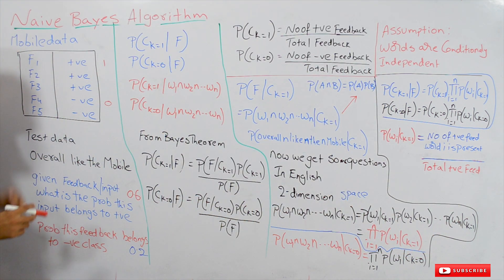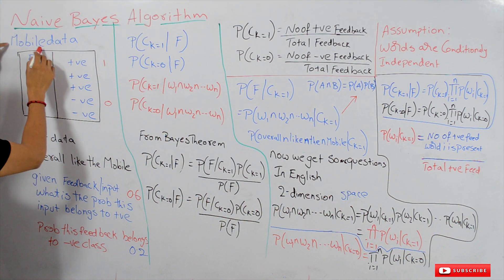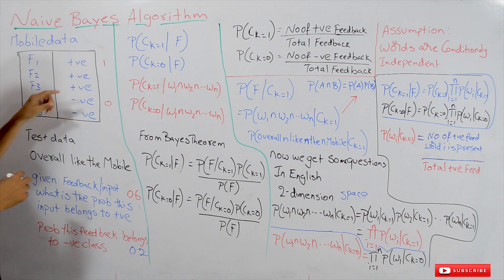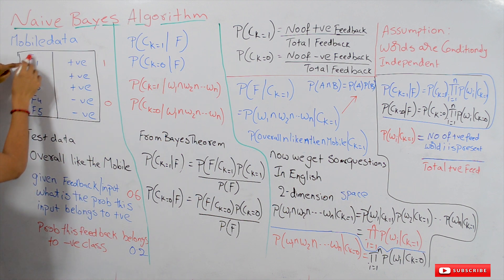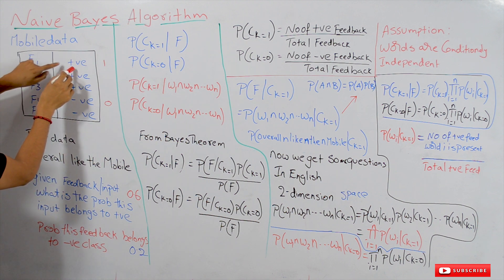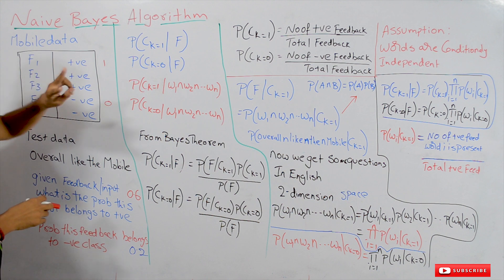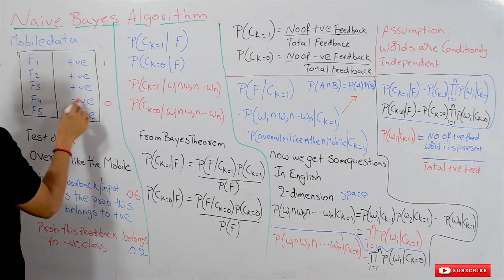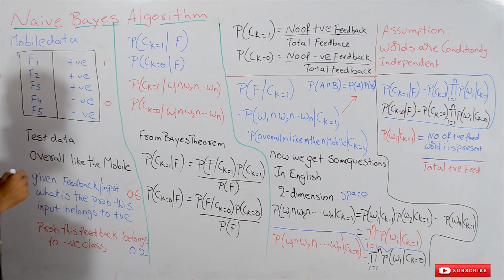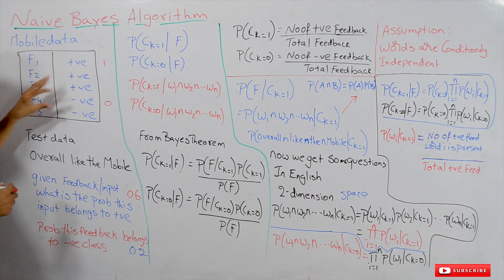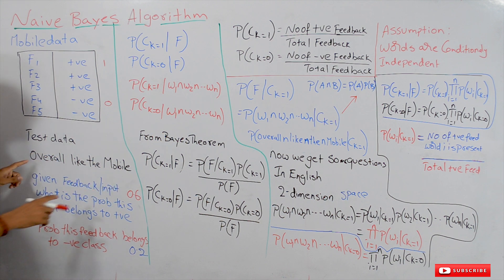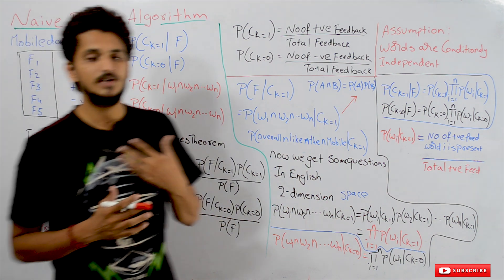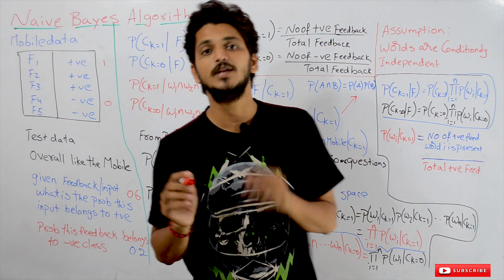The example dataset which we considered in our last class is the Amazon mobile dataset. In the dataset we identified five feedbacks — here the input is feedback. It has a positive class and a negative class, making it a two-class classification problem. Positive is written as 1 and negative is given as 0. This is taken as the training dataset, and we already took one feedback as the test dataset.